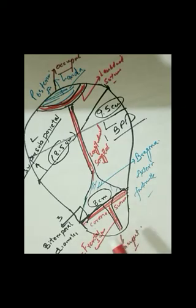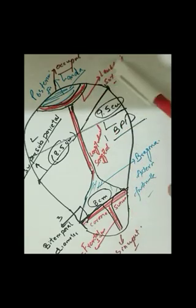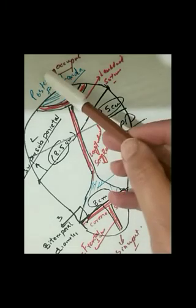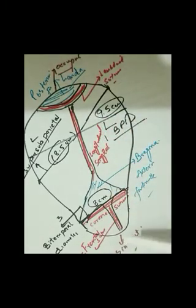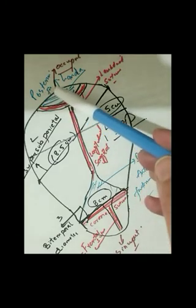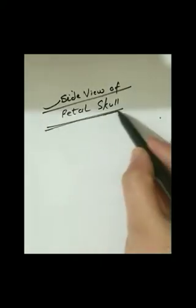Now coming to the sutures: we have the frontal suture, coronal suture, sagittal suture, and lambda suture. You can see from the red points — lambda suture, sagittal suture, coronal suture, and frontal suture. The areas are called posterior frontal and anterior frontal.